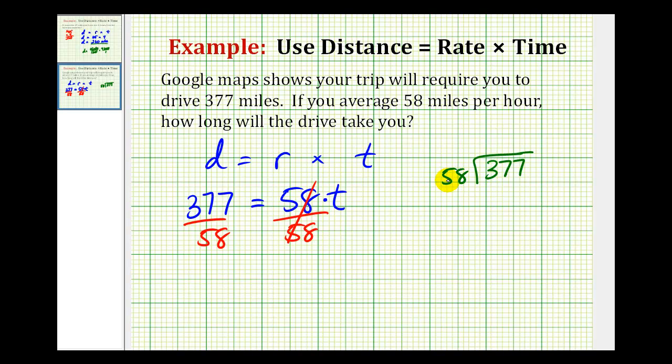This is close to 60. This is close to 380. So let's try a 6. 6 times 8 would be 48. Carry a 4. 6 times 5 is 30 plus 4, it's 34.